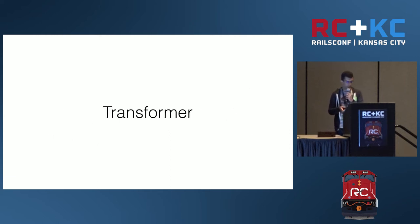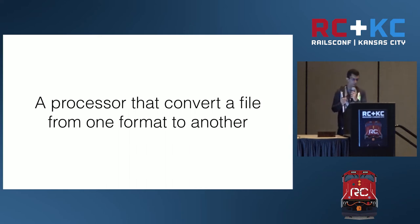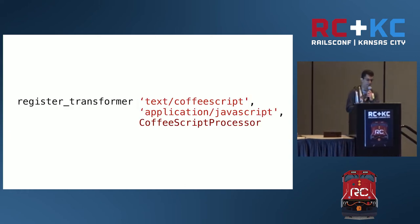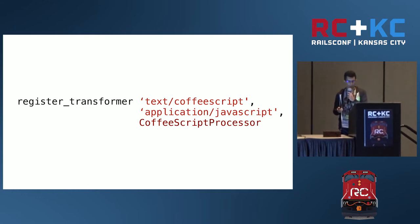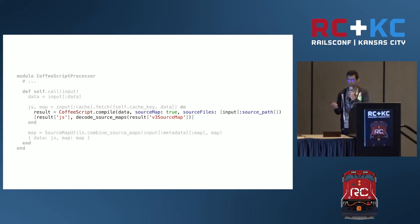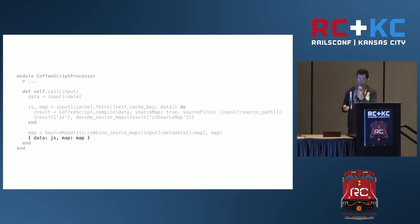Another special kind of processor is the transformer. A transformer is a processor that converts a file from one format to another. One example is the CoffeeScript transformer that takes a CoffeeScript file and returns a JavaScript file. The implementation is really simple — it's a callable object that takes an input, passes it through the CoffeeScript compiler, and returns the result as the data of the return hash.